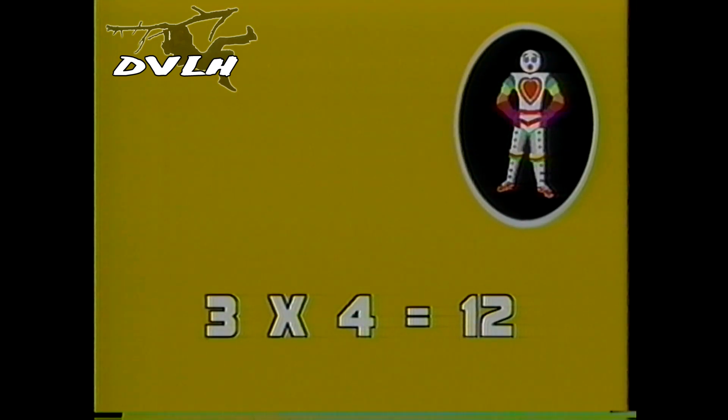Here come the threes! Three times one is three. Three times two is six. Three times three is nine. And three times four is twelve. Three times five is fifteen. Three times six is eighteen. Three times seven is twenty-one. And three times eight is twenty-four. Three times nine is twenty-seven. Three times ten is thirty. Three times eleven is thirty-three. And three times twelve is thirty-six.